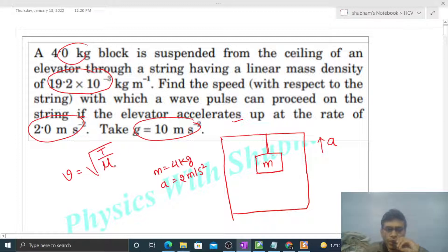The linear mass density value is directly given in the question as 19.2×10⁻³. You just have to find out the value of tension. How much tension will be in this string?